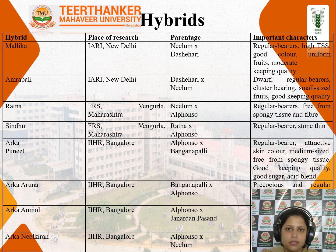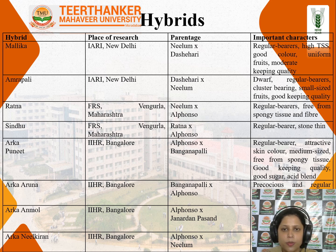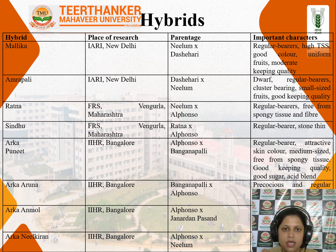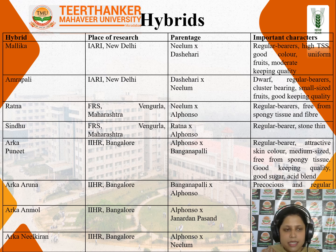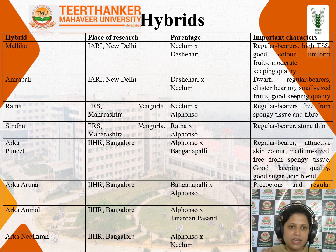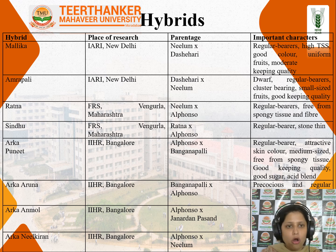Important hybrids of mango are given in the table. The first one is Malika, which is developed by IARI, Indian Agricultural Research Institute, Pusa, New Delhi, whose parentage is Neelam and Dasheri. The important characters of Malika are that it is a regular bearing cultivar, it has high TSS, good colour, uniform fruits and moderate keeping quality. The main problem in mango often observed in the northern part of our country is the alternate bearing or irregular bearing, meaning in one year the tree bears fruit and in the following year it bears no fruit or very little. The year when the tree bears fruit is called the on year, followed by the off year. Malika being a regular bearer overcomes this problem.